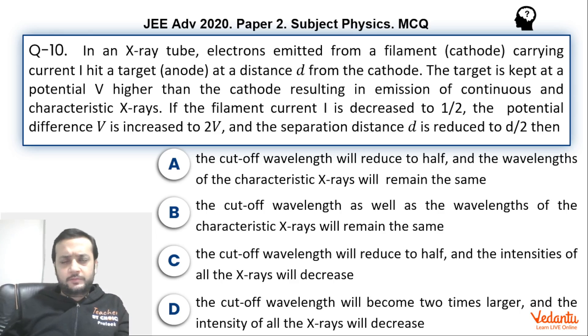And lambda cutoff is going to become half. So our answer will be cutoff wavelength will reduce to half. Wavelength of characteristic X-rays will remain the same. So this is correct option. Cutoff wavelength as well as wavelength of the characteristic X-rays remains same. This is wrong. Cutoff wavelength will reduce to half and intensity of all X-rays will decrease. This is also correct. The cutoff wavelength will become two times larger and the intensity of all X-rays will decrease. This is wrong. So answer will be A and C.